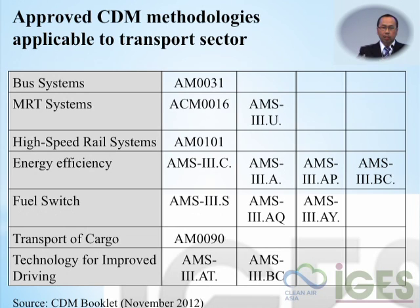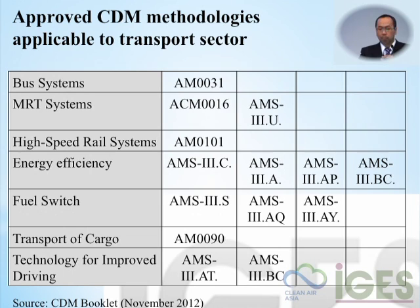In CDM, small-scale emission reduction projects are categorized as AMS. AMS3 covers small-scale CO2 and greenhouse gas emission reductions. For larger projects like MRT, they use ACM because the system is more complicated, taking into account the access and egress system, which differs from bus systems or high-speed railway systems.